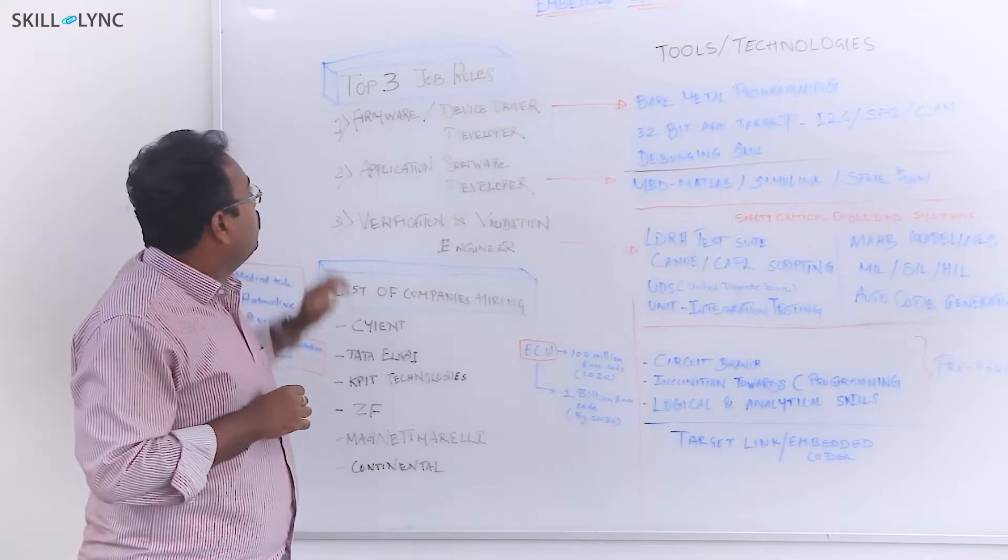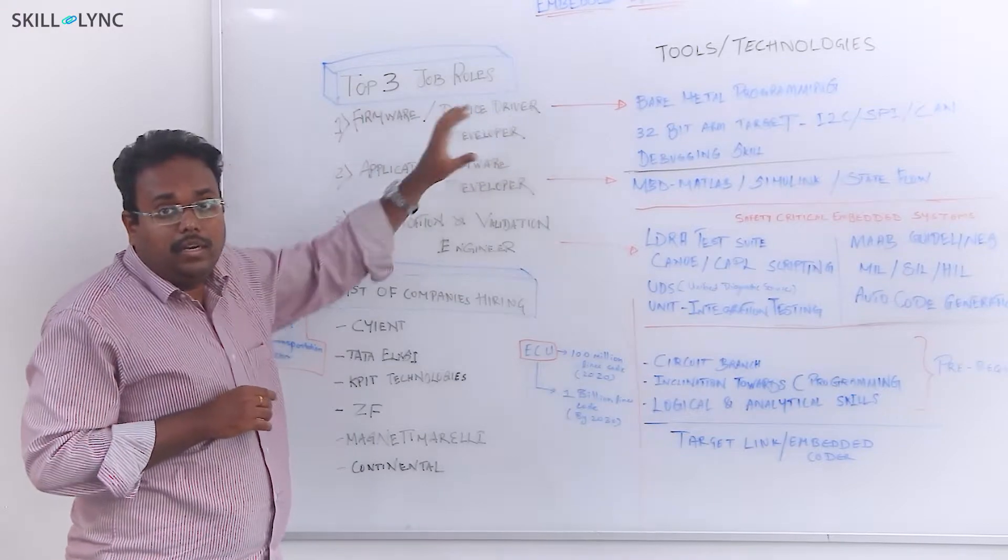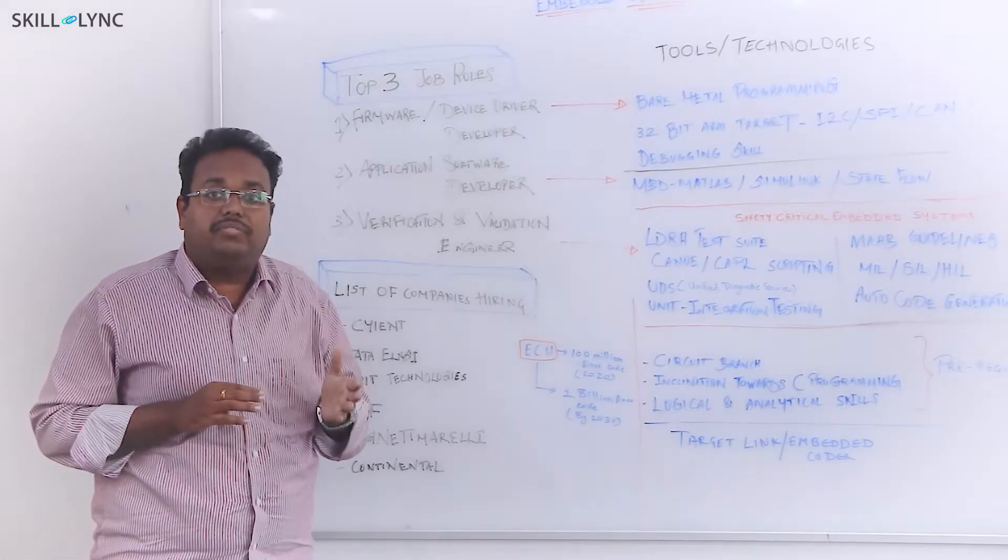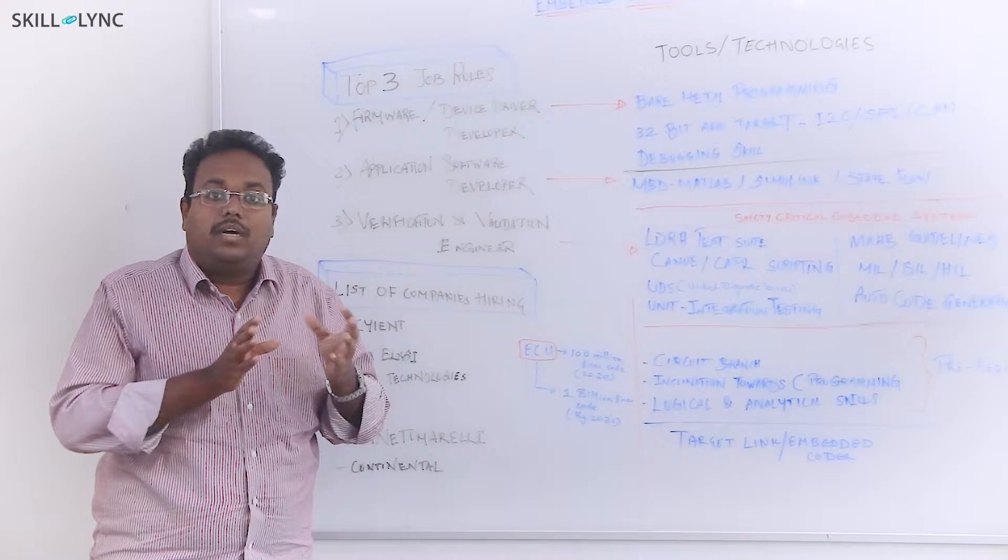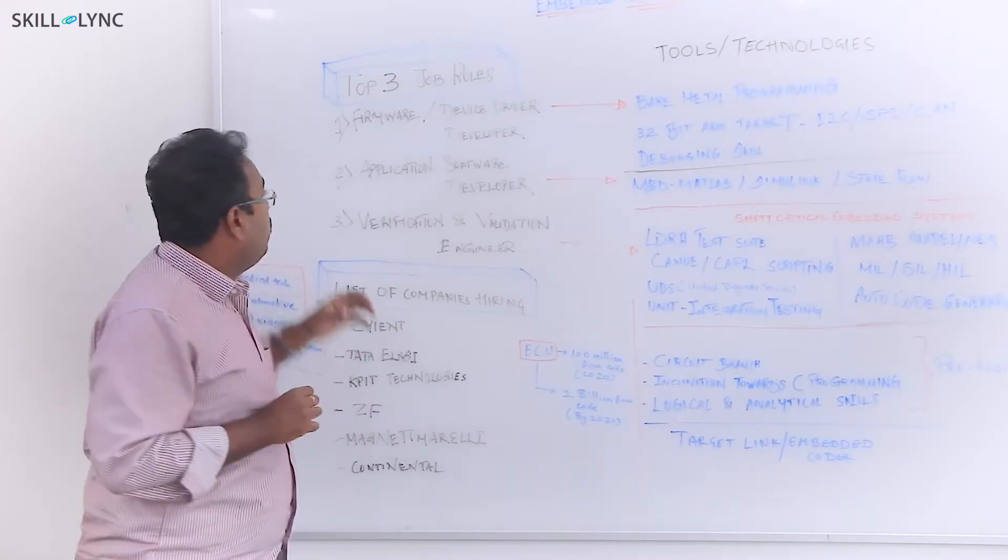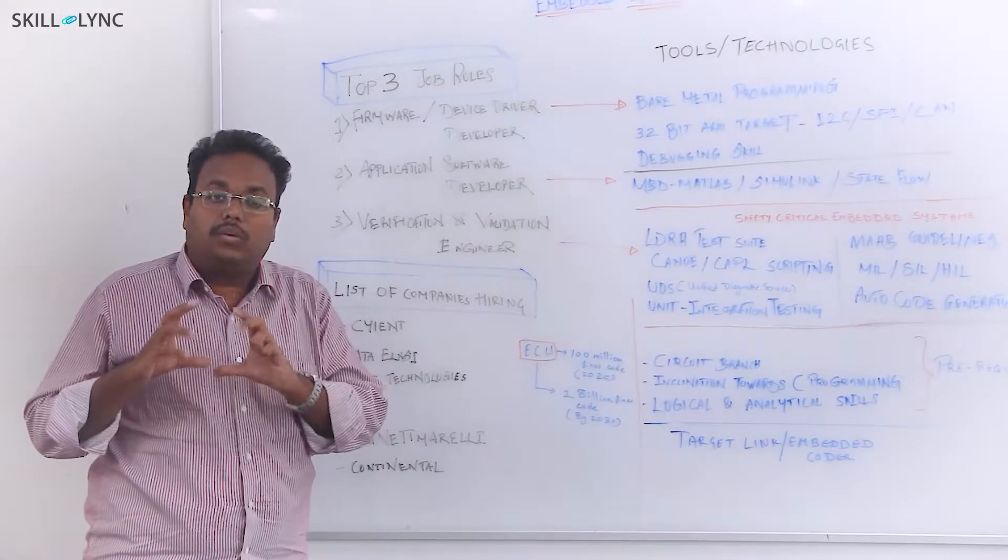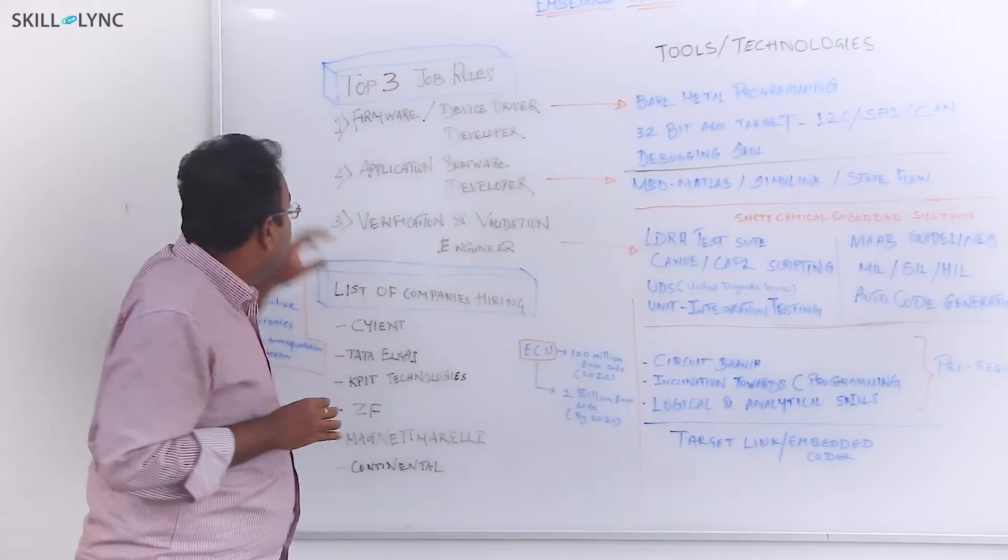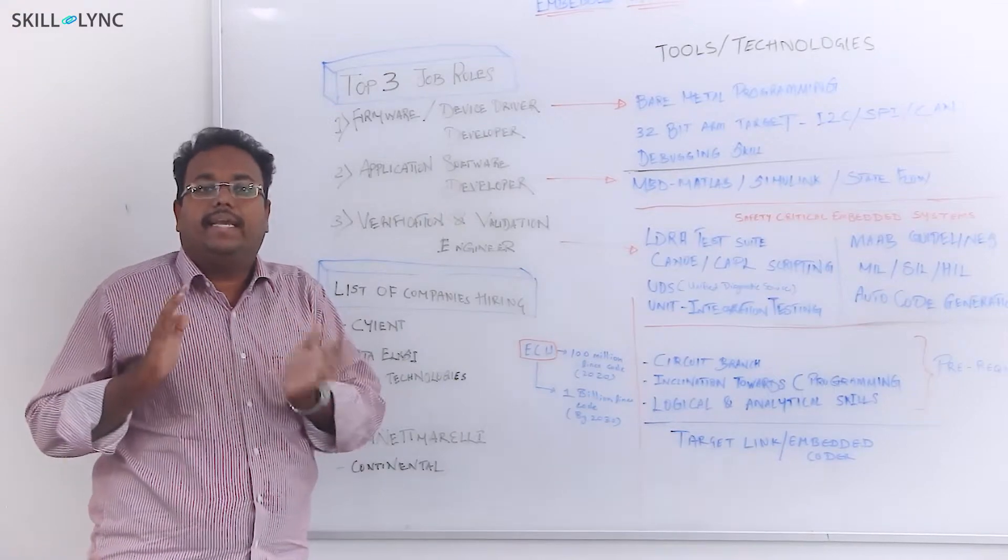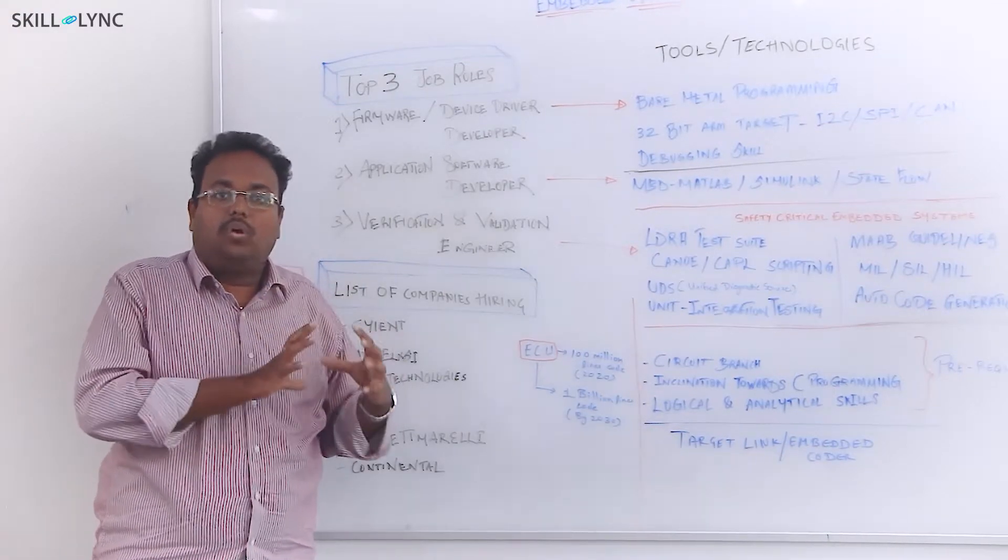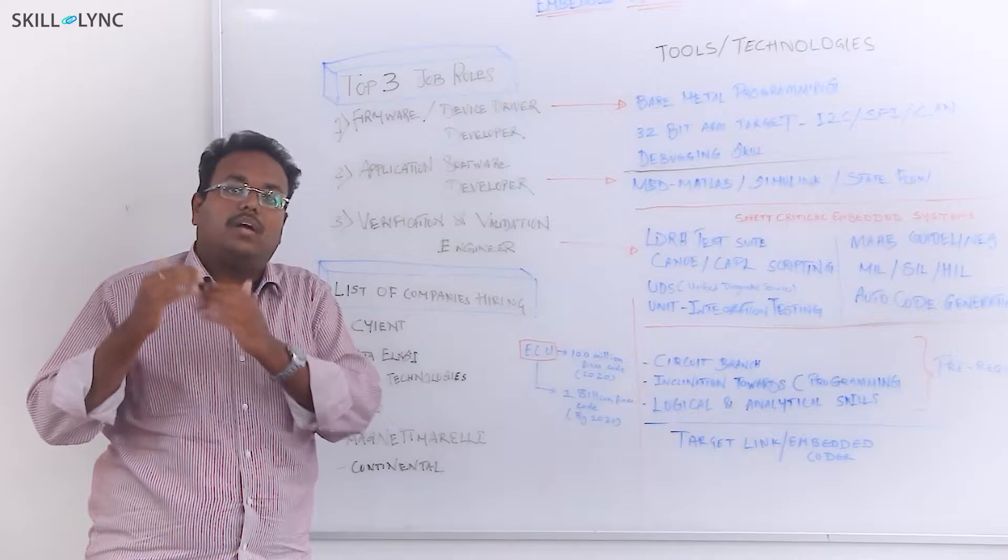The three job roles: one is firmware developer or device driver developer. Reiterating the definition of embedded system, it's all about developing a dedicated software on a bare minimum hardware. The first job role is the set of members who would be developing the core part of the software. The second job title is on the application software development. If you take any software stack, it will have a core part or a middleware or you could say a base software, and on top of that there will be application software that's running.